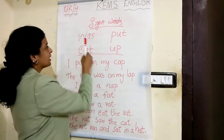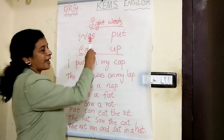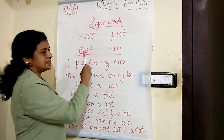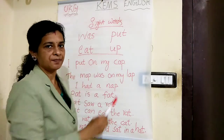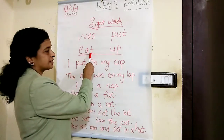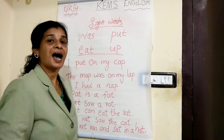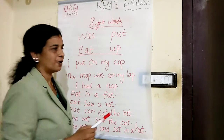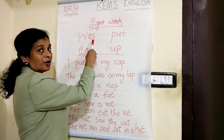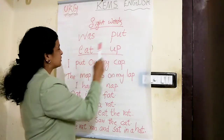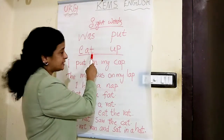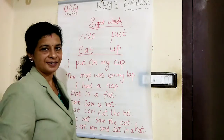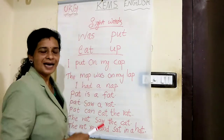Put. W-A-S. Was. E-A-T. Eat. And U-P. Up. Once more: Was, Put, Eat, and Up. These are sight words.